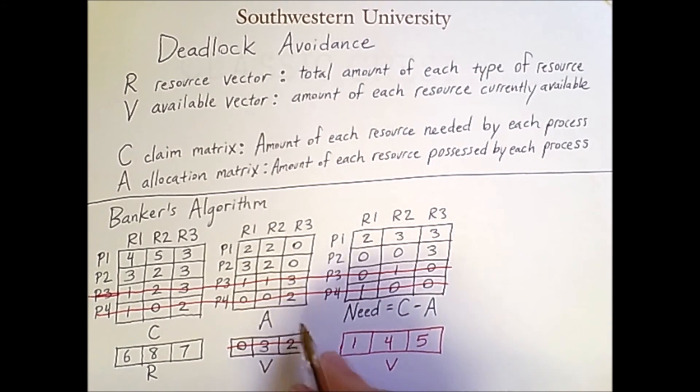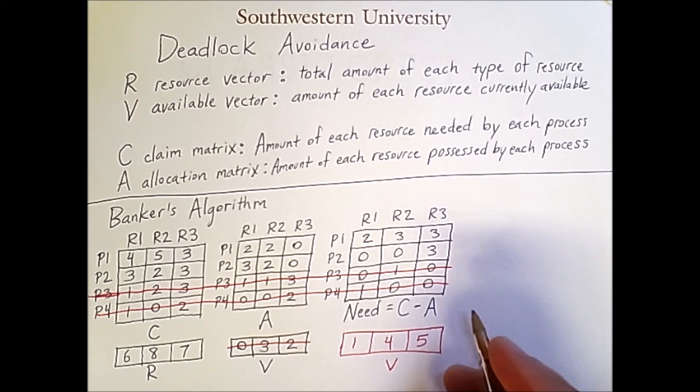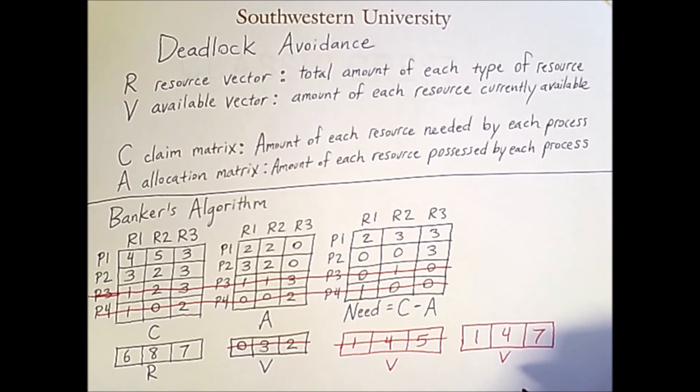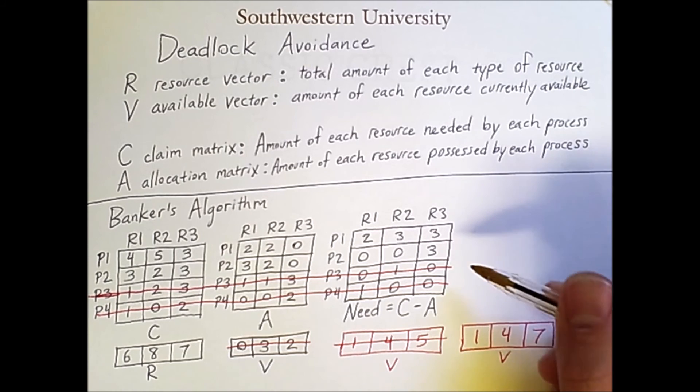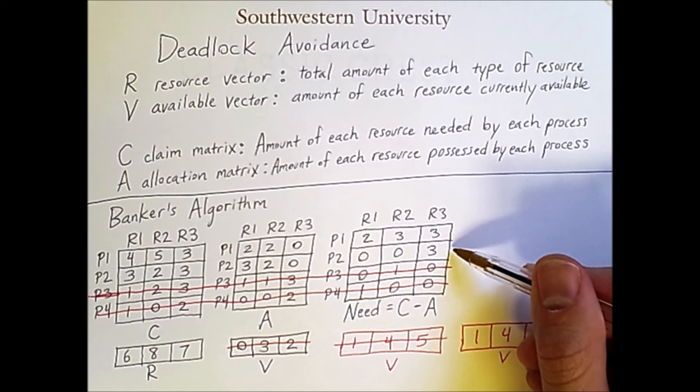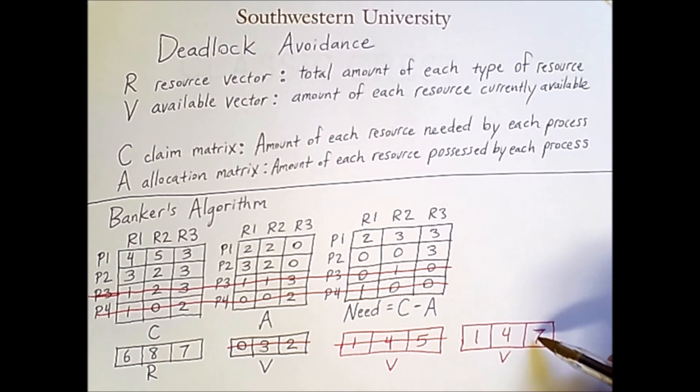And that will mean that its resources are reclaimed, leading to the following available vector. Given this available vector and these two processes left to run, the only one that is safe to run is process 2, since 3 is less than 7 and 0s are less than these values.